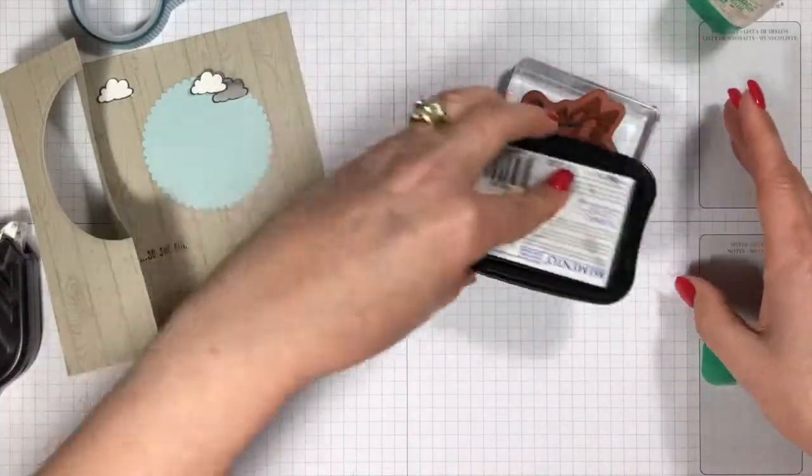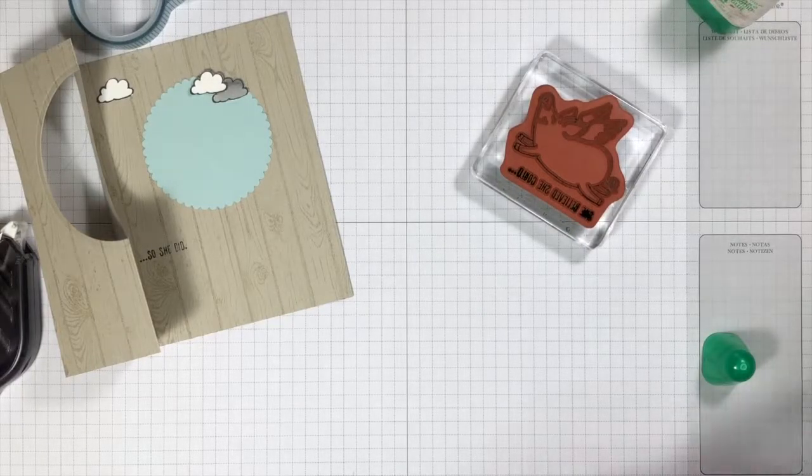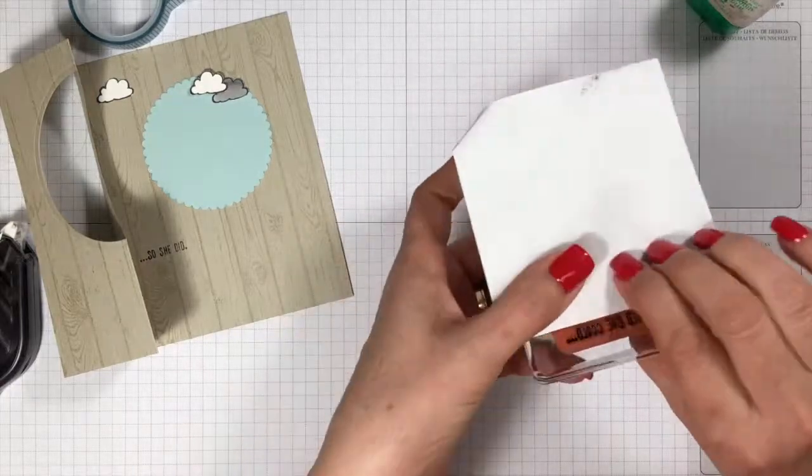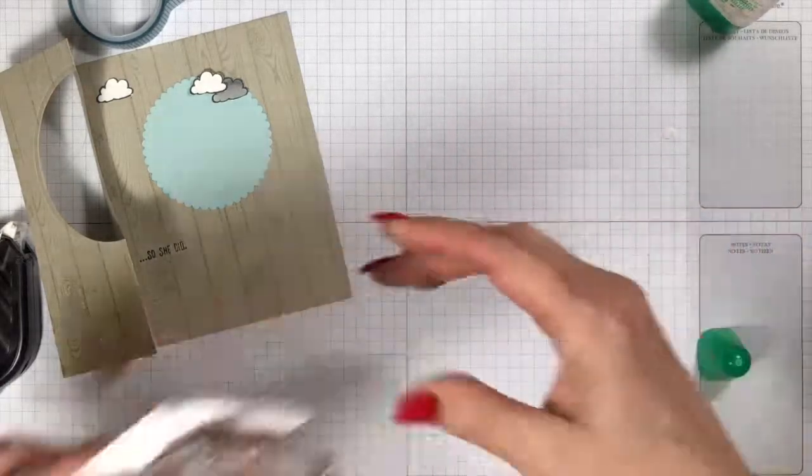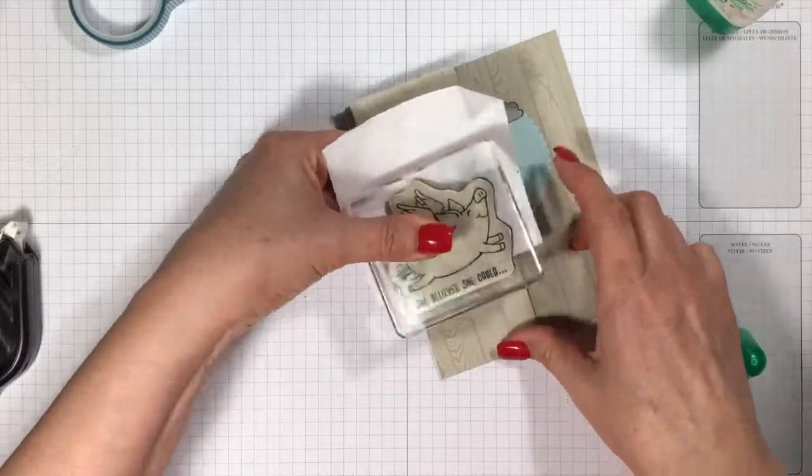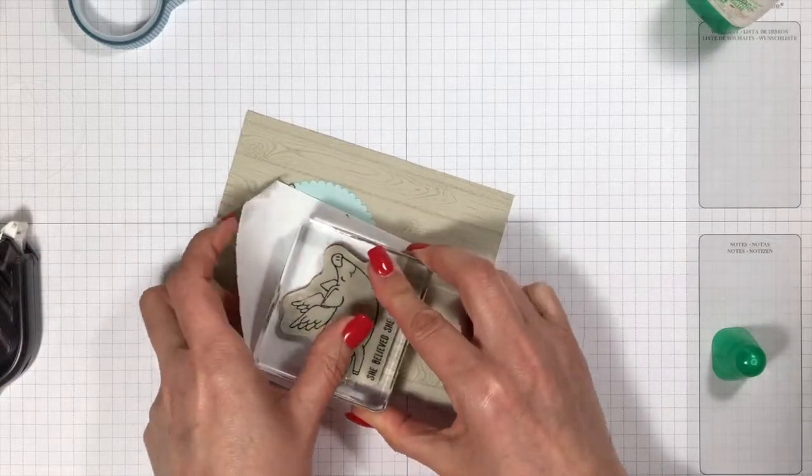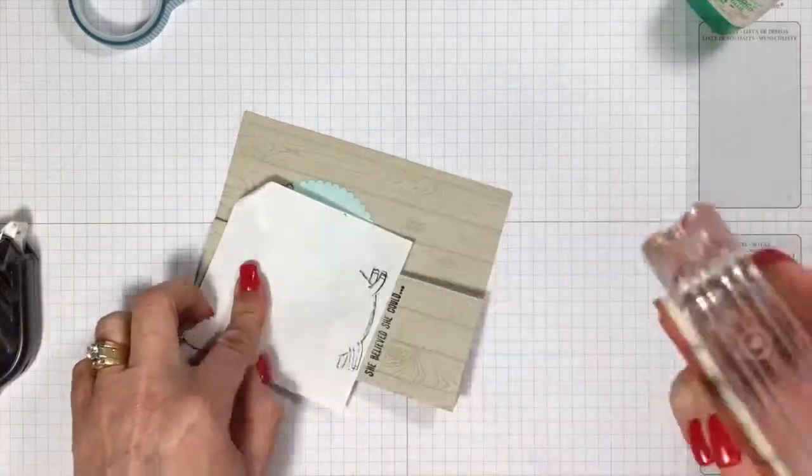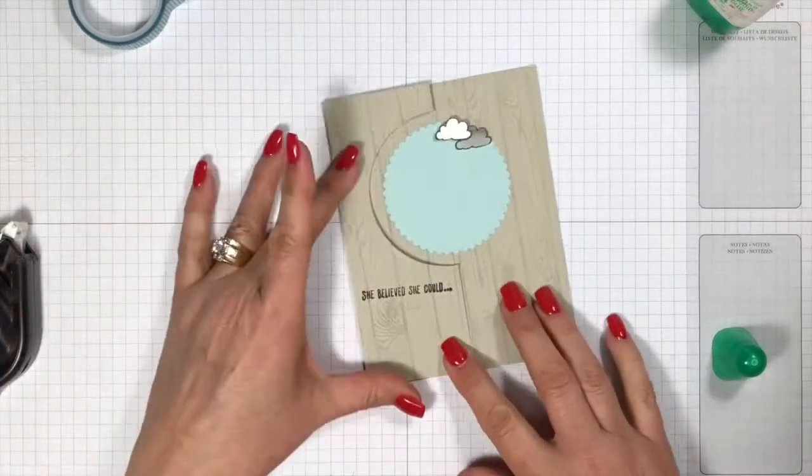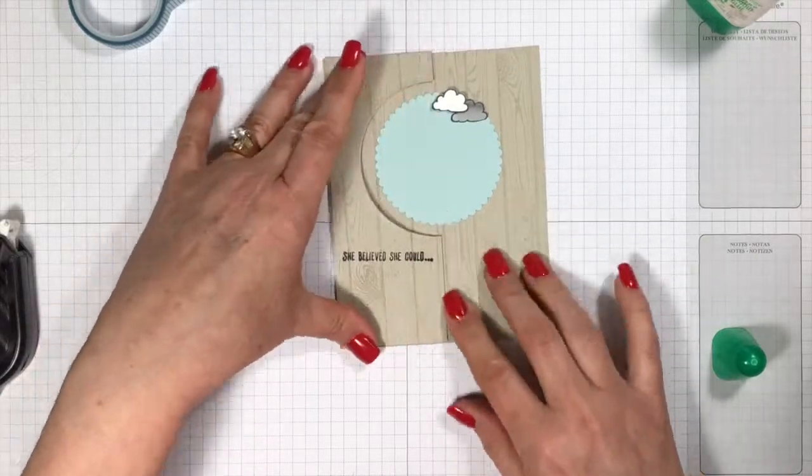And I want She believed she could on the front. So I'll put a little bit of ink on the bottom here. And I'm going to cover that up with a scrap piece of paper there so we don't get it all over the place. And I got one shot to do this so let's hope I do it right. There we go. Perfect. She believed she could so she did. So far so good.